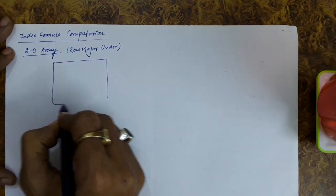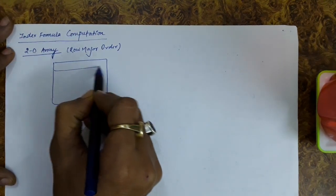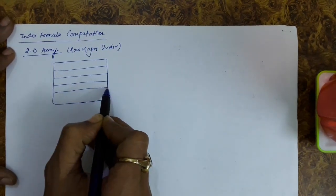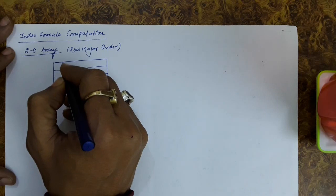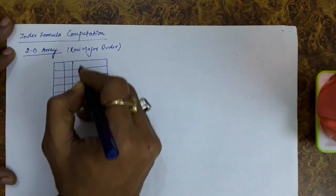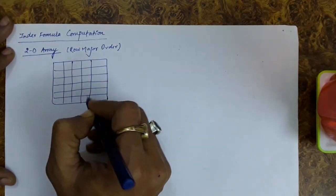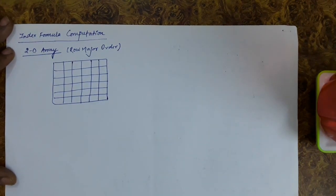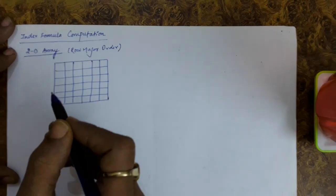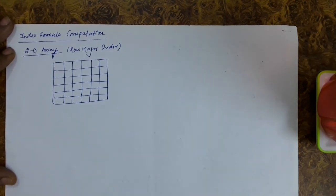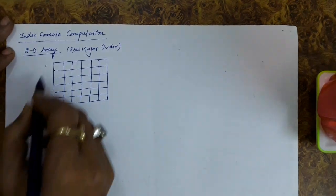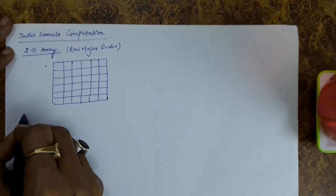A 2D array is actually assumed as a form of a matrix in which there are some rows and some columns. In this 2D array there will be two dimensions — one for the row side and another one for the column side.